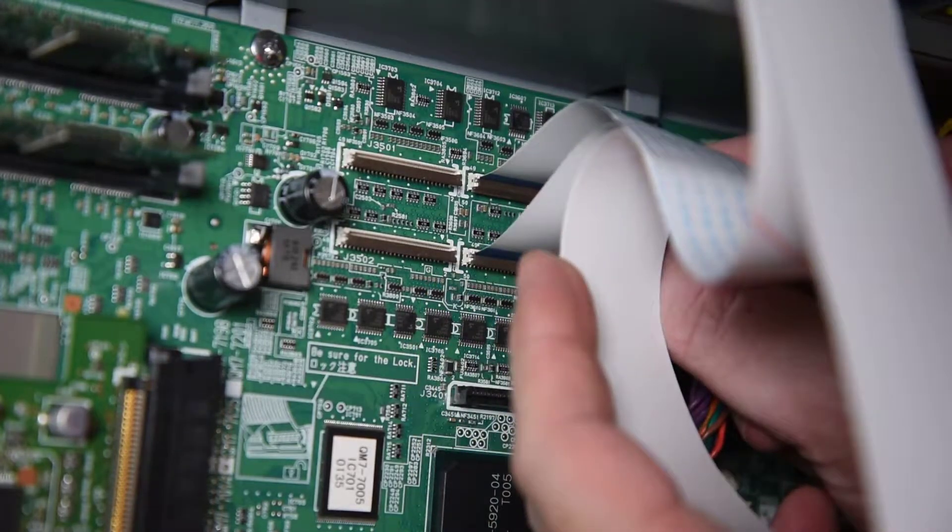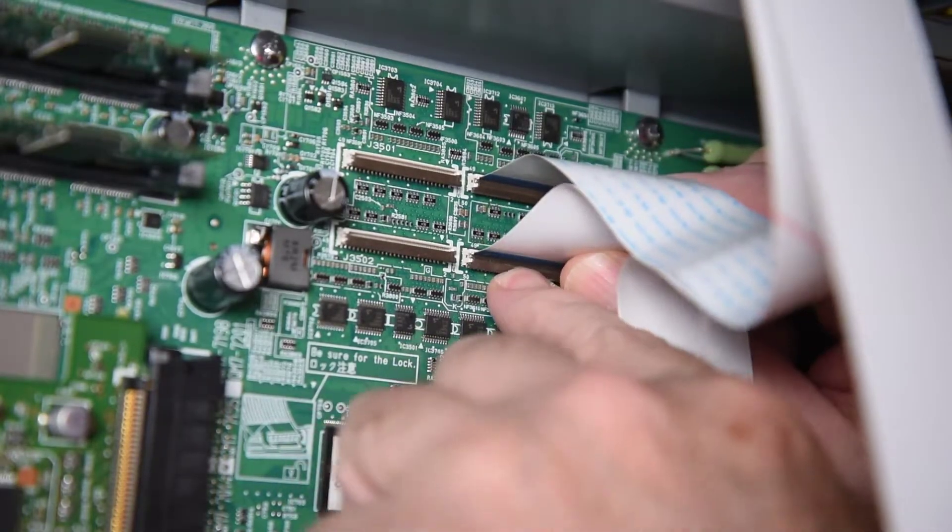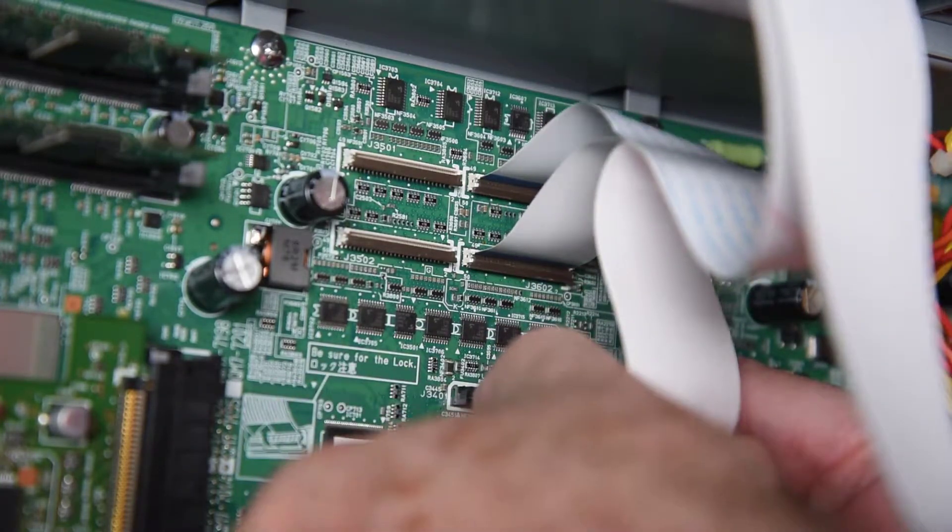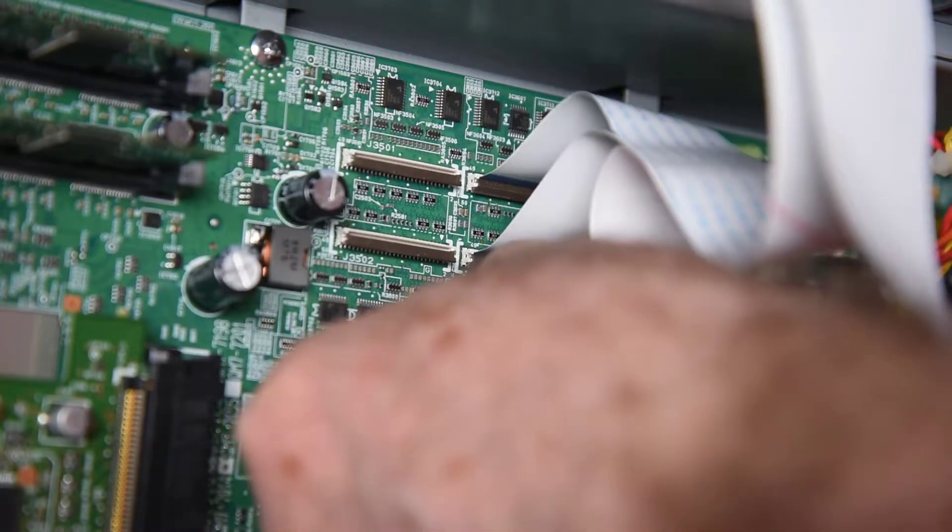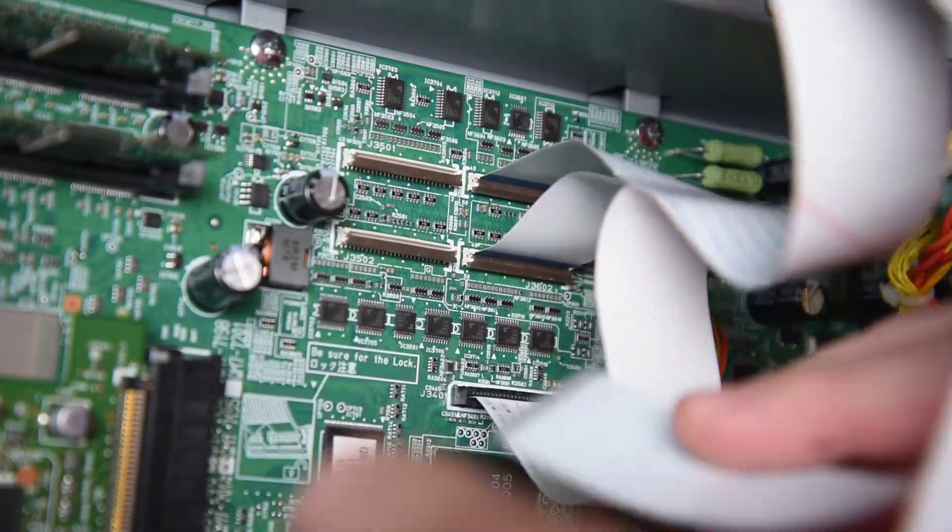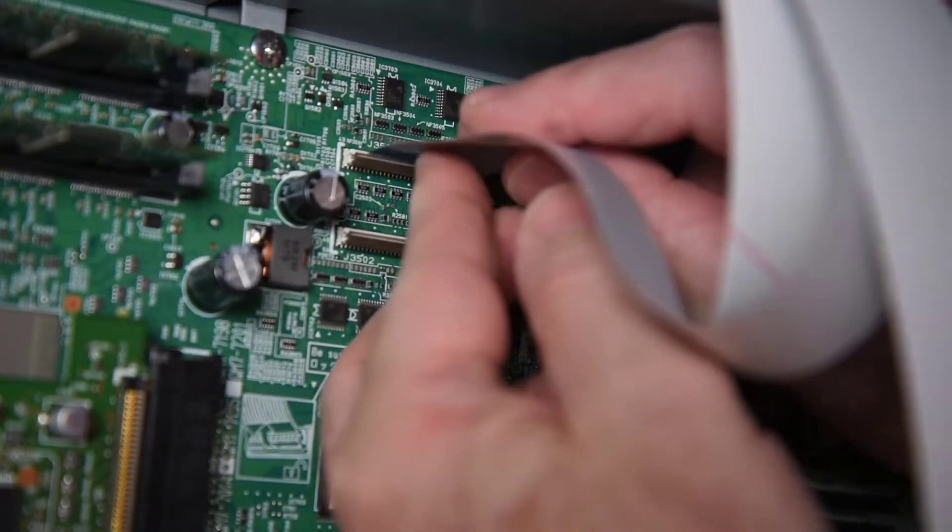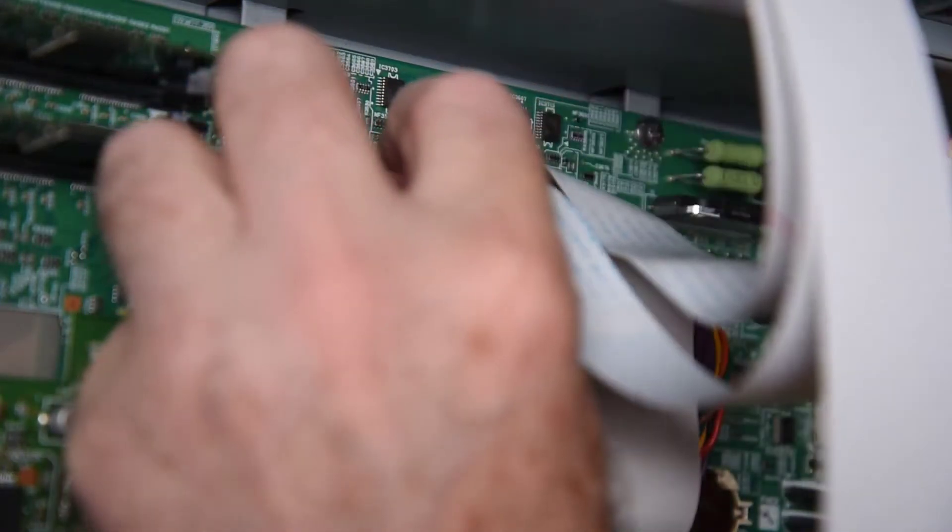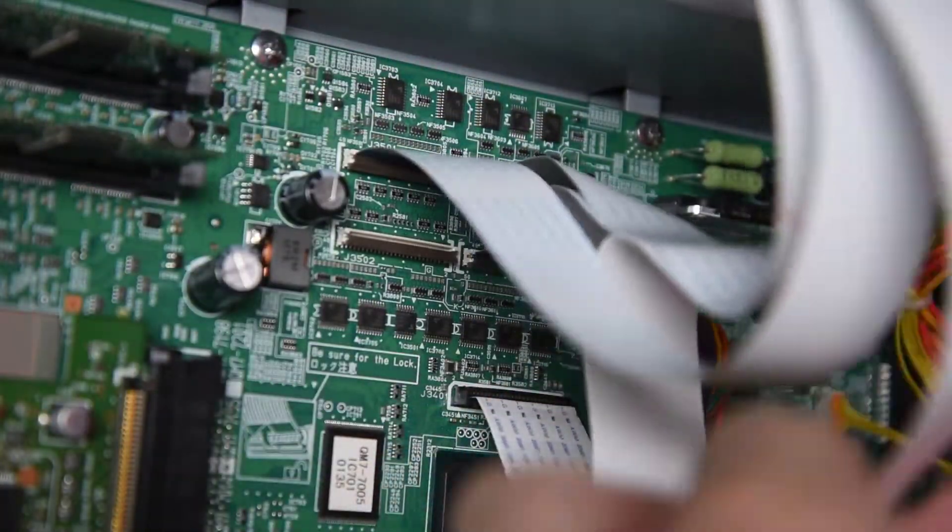Again, the fine pitch cables go in connectors that have locking levers. Once the cable is all the way in the connector, the lever is pressed down to lock it in place. The coarse pitch cable just pushes into its connector. This cable doesn't have much in the way of a stiffener on the end of it, and it takes a bit of force to insert it. I even bent it a bit here putting it in the connector. I like the locking connectors much better.